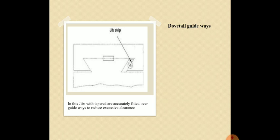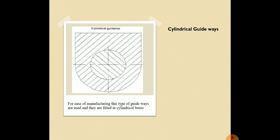Next one is the cylindrical guideways. For ease of manufacturing, cylindrical guideways are used. They are basically fitted in the bore of a carriage and they are not suitable for light and short loads.